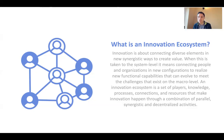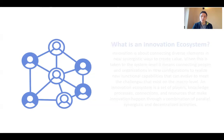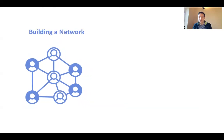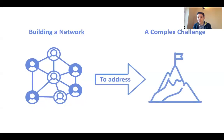An innovation ecosystem is a set of players, knowledge, processes, connections, and resources that make innovation happen through a combination of parallel, systemic, and decentralized activities. It's a network of individuals or organizations — we can also think about it as a community — that we're building to address some kind of complex challenge, bringing together different resources, capabilities, and organizations in synergistic and coordinated ways.